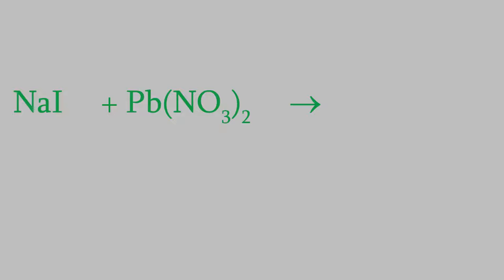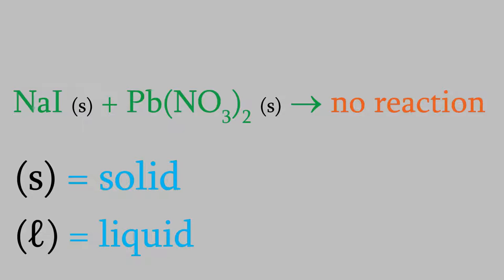First, I want to write what happened when we combined the two solids. We can write the phase of each compound as a little abbreviation in parentheses after the formula. In this case, they were solids, so we write a little (s) in parentheses. As you might remember, nothing happened when we combined the two solids, so we'll write that on the product side. If we had had a pure liquid instead of a solid, we'd write an (l) in parentheses, and if it were a gas, we'd write a (g).